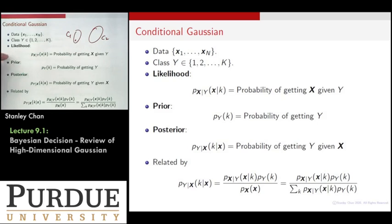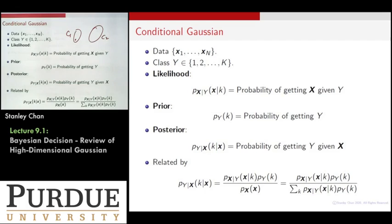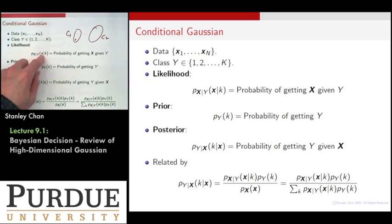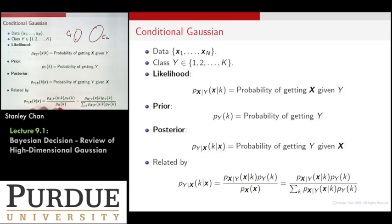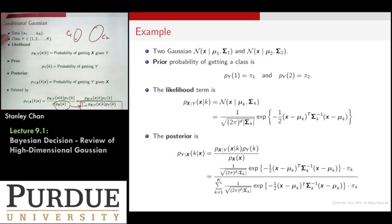The posterior distribution is the probability of getting class i given that you have observed data point x — the reverse direction of the likelihood. The likelihood says: given you are in class k, what is the probability of getting sample x? The posterior says: now that I have seen x, what is the probability it comes from class k? These are related by their product: multiplying the likelihood and the prior gives the joint probability, and dividing by the total probability gives the posterior. This is Bayes' theorem, and the denominator can be expanded using the law of total probability as the sum of individual products.